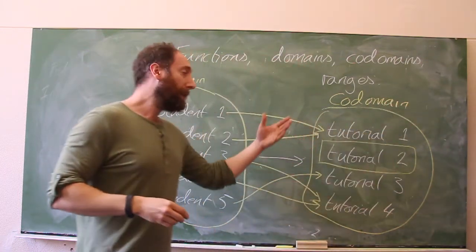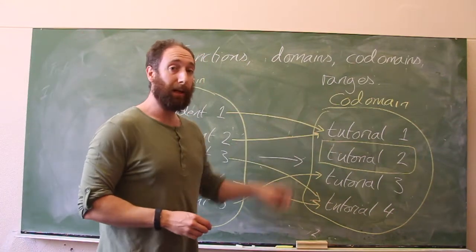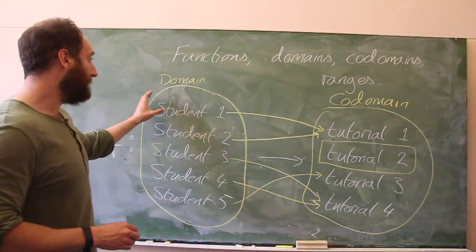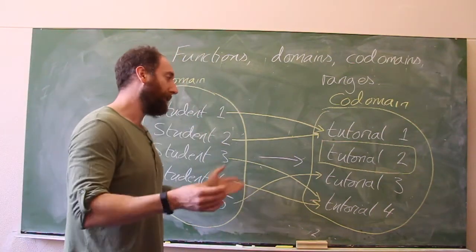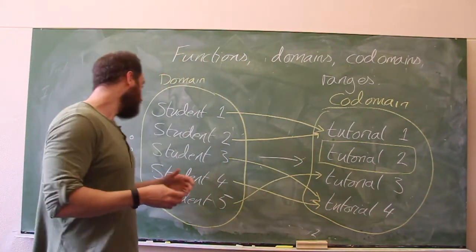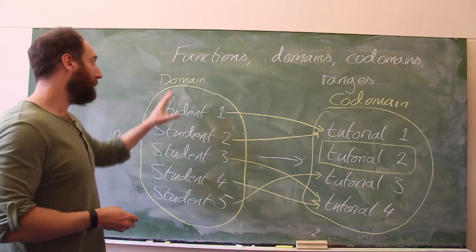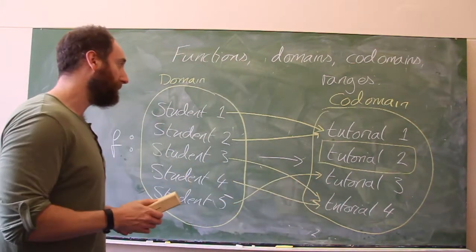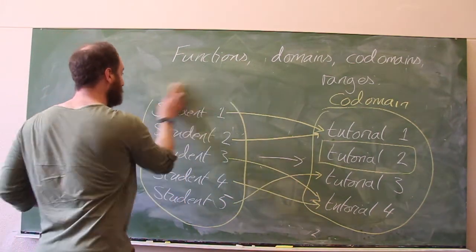For the particular function which we've got here, tutorial 2, although it is in the co-domain, is not in the range because none of the students get mapped into tutorial 2. None of the students go into tutorial 2. So that's an example of a function on a discrete set of objects. Generally, we're not interested in sets of this sort — we're interested in sets like the real numbers. So let's look at an example like that.